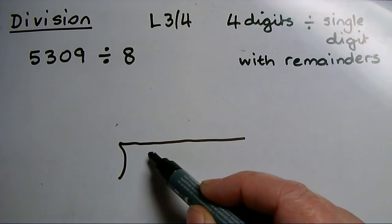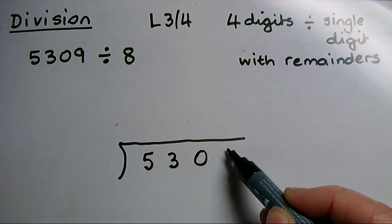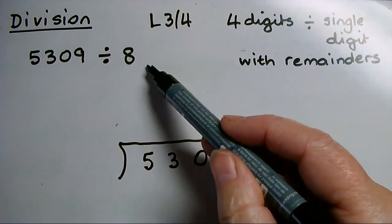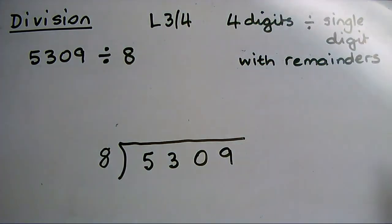First of all, I'll write the number I'm going to divide underneath the bus stop. The number I'm dividing by, the 8, goes on the front.